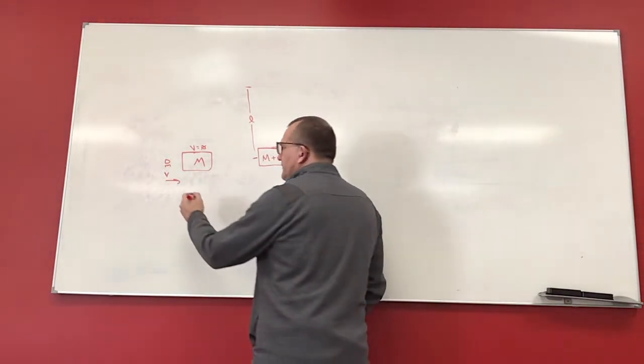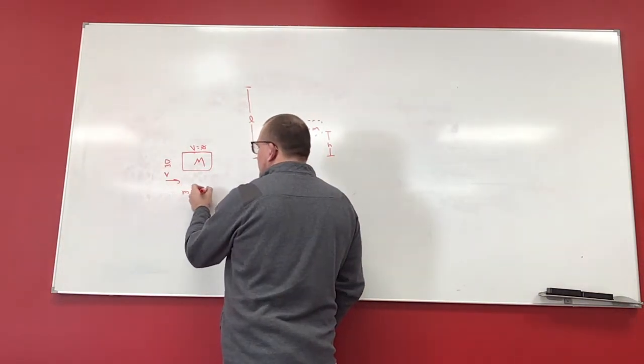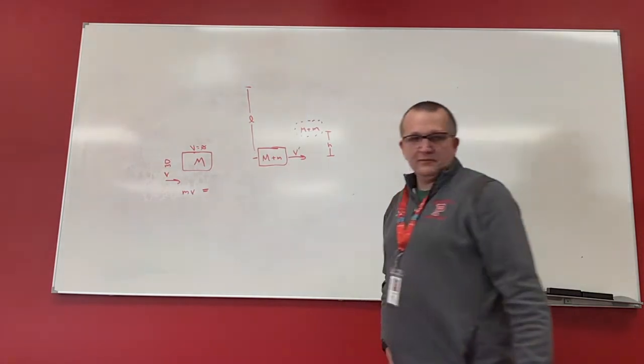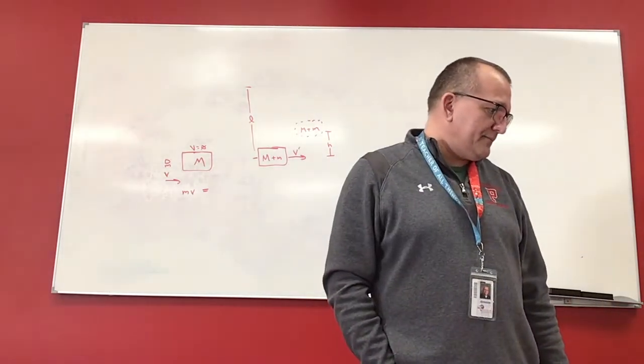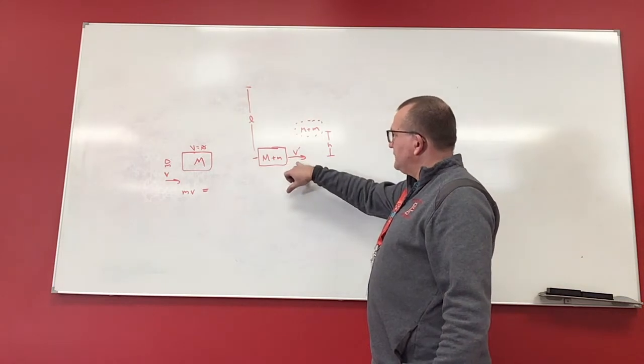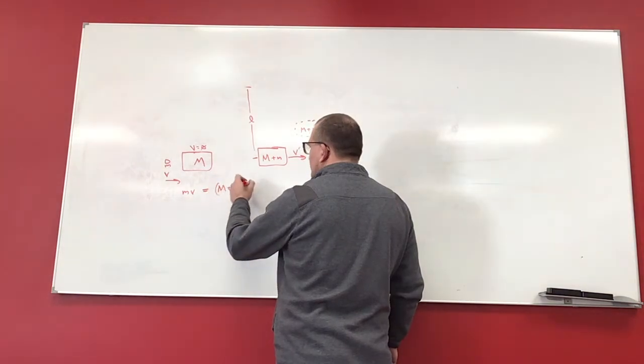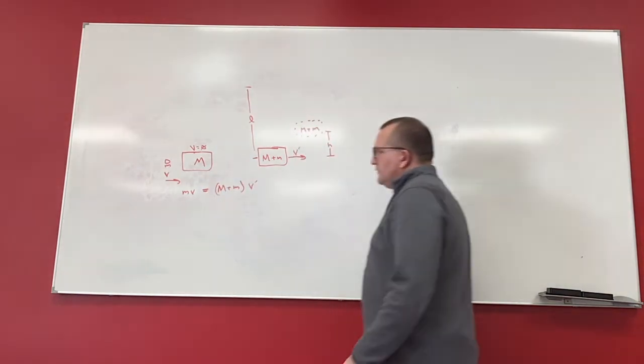So the momentum that I start with is little m V, and that's going to equal the momentum that I end with, which is the combined masses times V prime. With momentum being conserved, so it's this V prime.